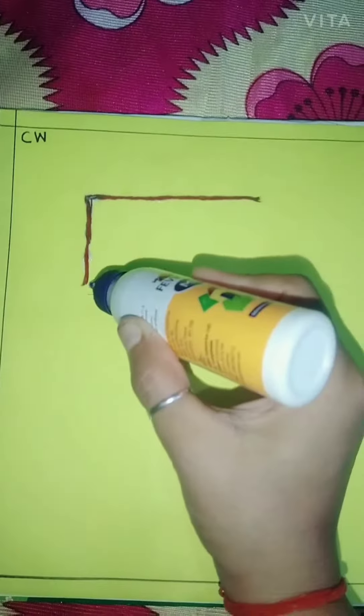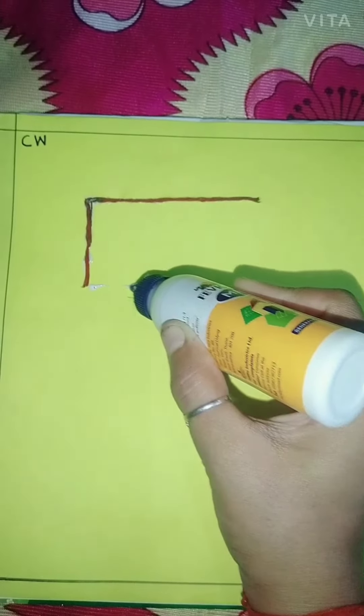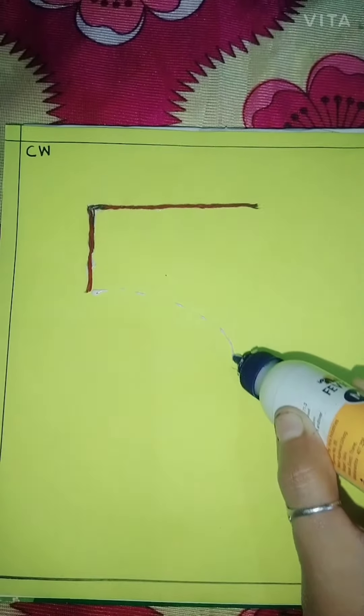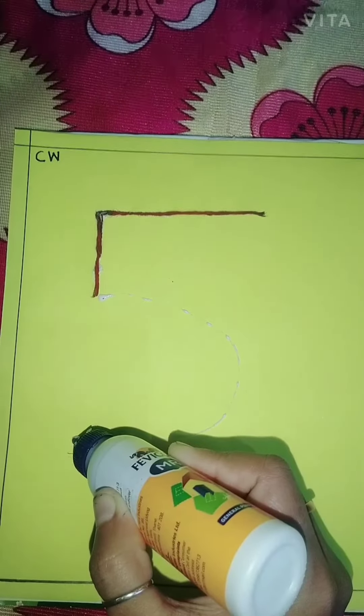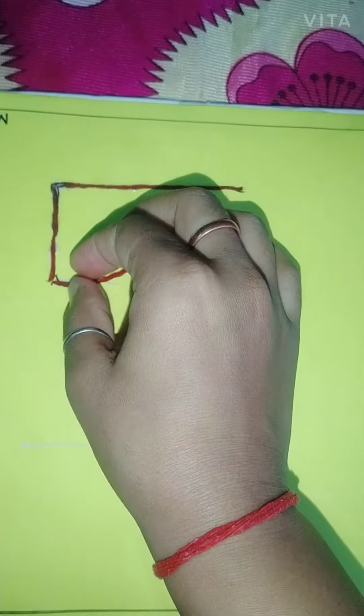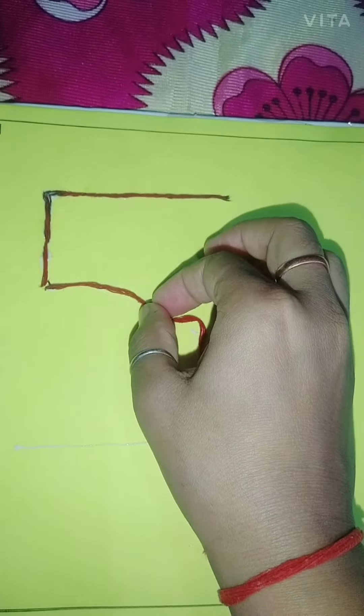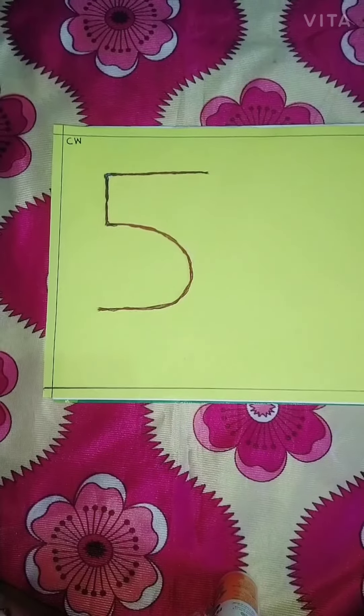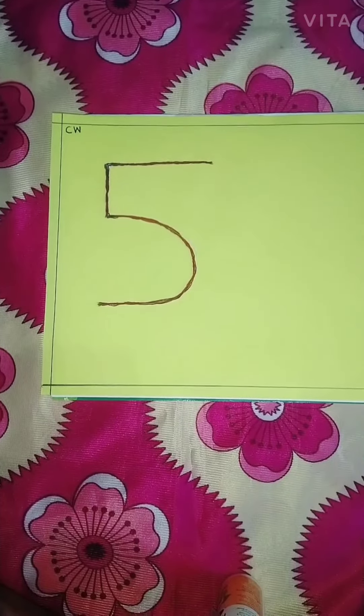Now children, we will make a line. Now again we will make the thread. Okay? Now children, our 5 is ready.